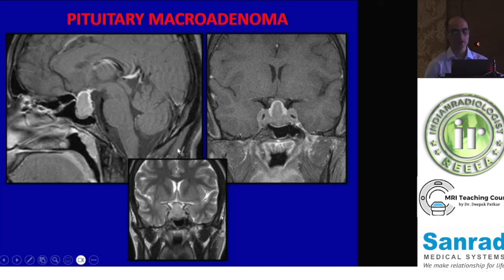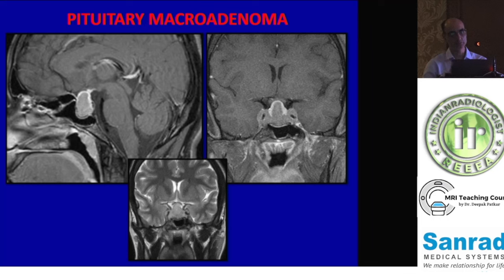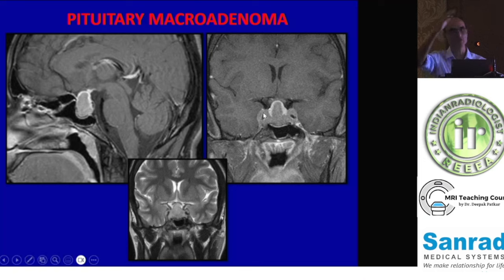Another example of pituitary macroadenoma with the typical configuration — suprasellar and bilateral parasellar components involving the bilateral cavernous sinuses, but again the ICA flow-voids are encased yet well maintained. Even in a setting of macroadenoma, rapid multiphasic contrast imaging is performed because many times you can identify residual normal enhancing pituitary parenchyma displaced along one aspect of the macroadenoma, helping the neurosurgeon salvage whatever normal pituitary parenchyma he can. In this case, you can see a good rind of normal enhancing pituitary parenchyma splayed along the superior margin of the central portion of the macroadenoma.